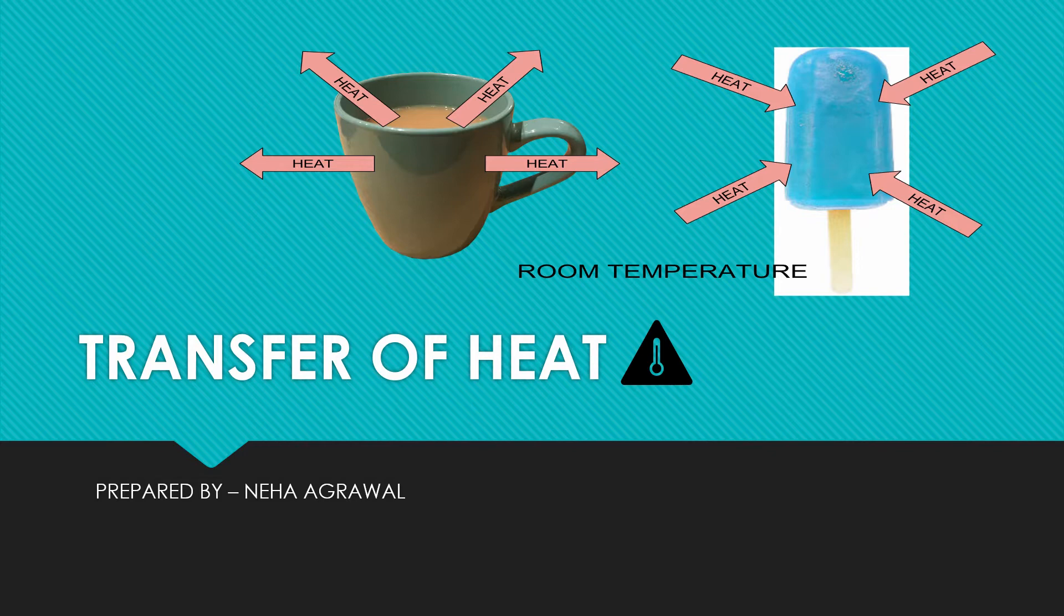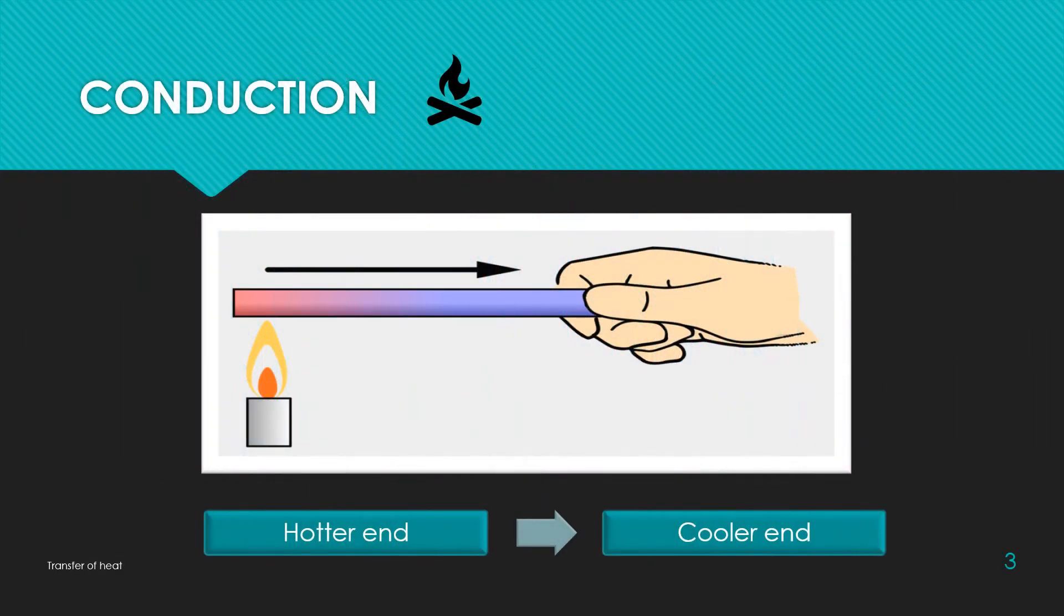You might have observed that a frying pan becomes hot when kept on a flame. It is because the heat passes from the flame to the utensil. When the pan is removed from the fire, it slowly cools down. Why does it cool down? Because the heat is transferred from the pan to the surrounding. So you can understand that in both cases, the heat flows from the hotter object to a colder object.